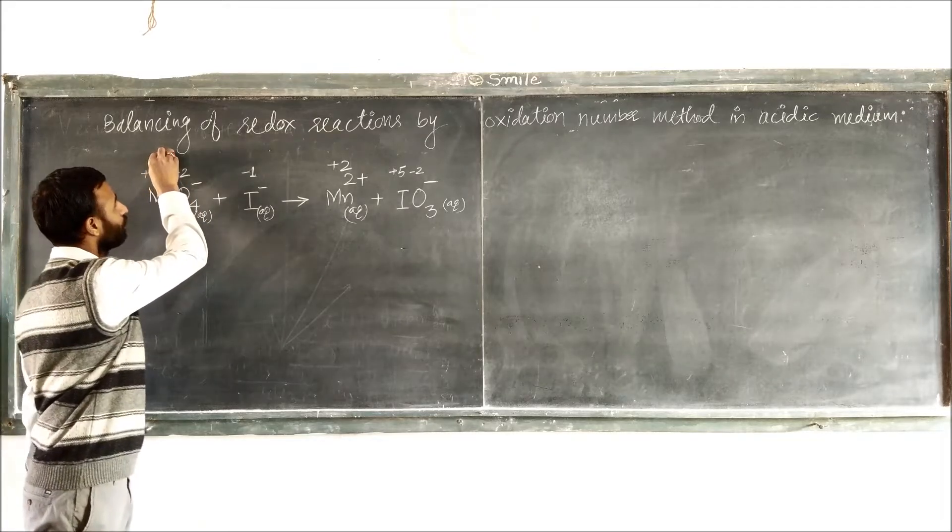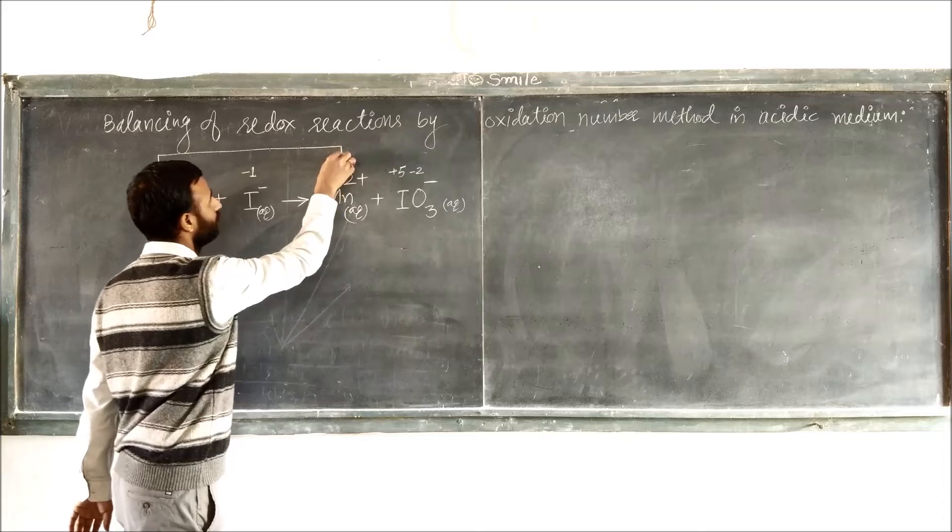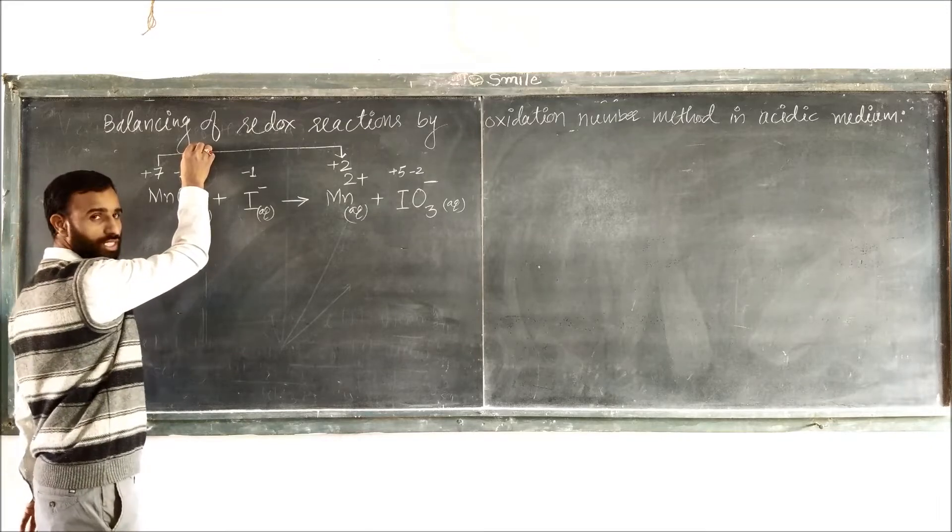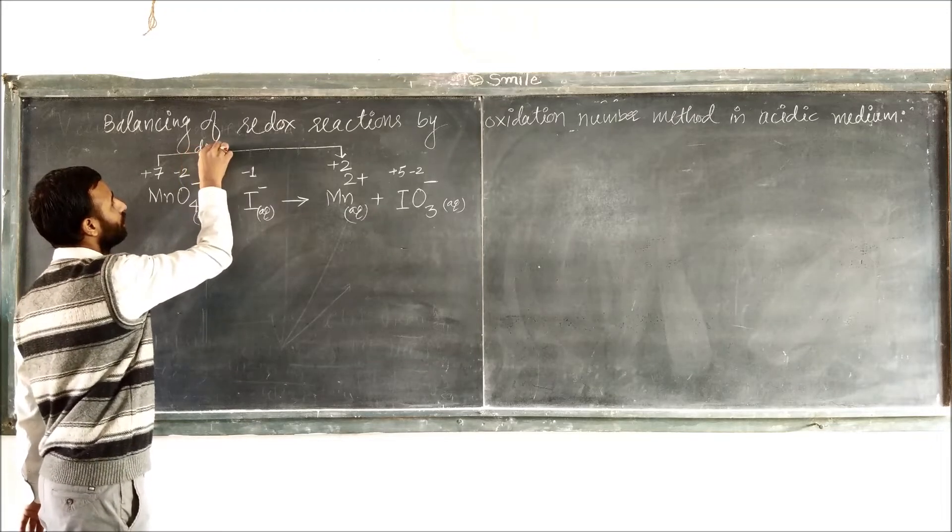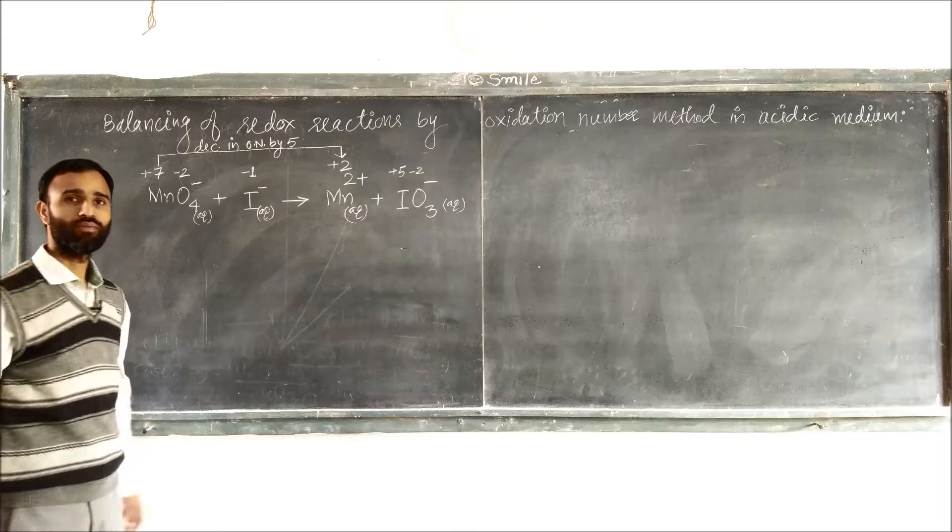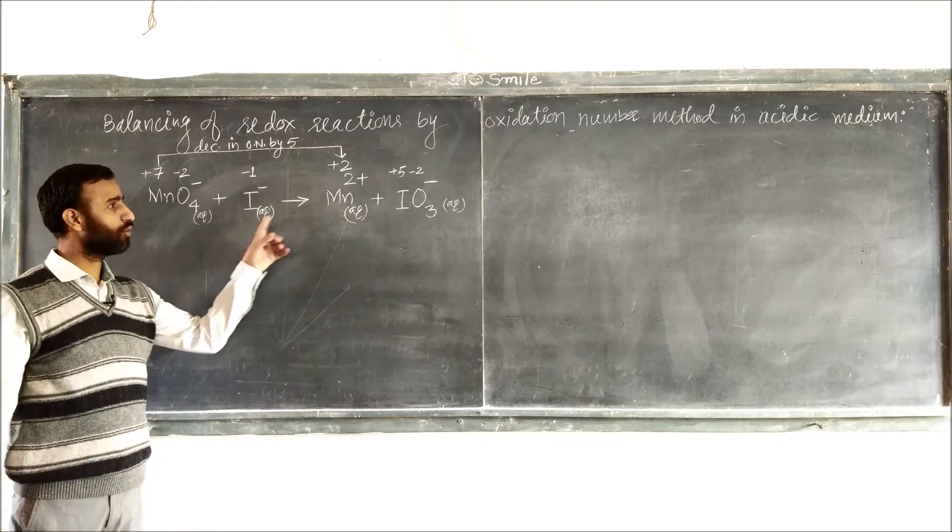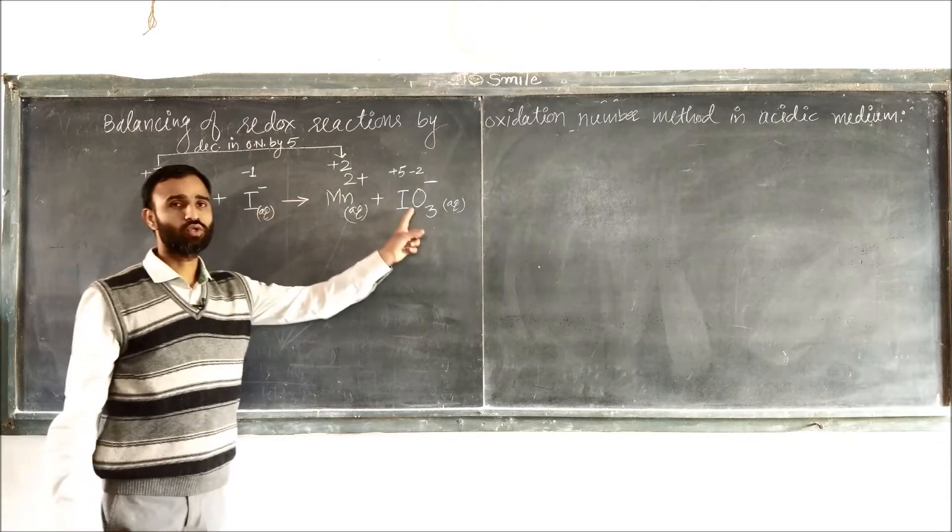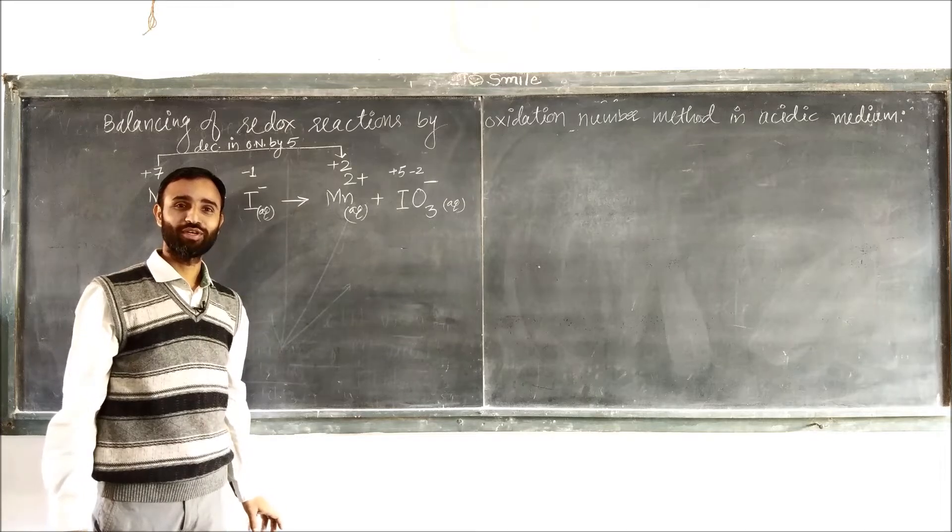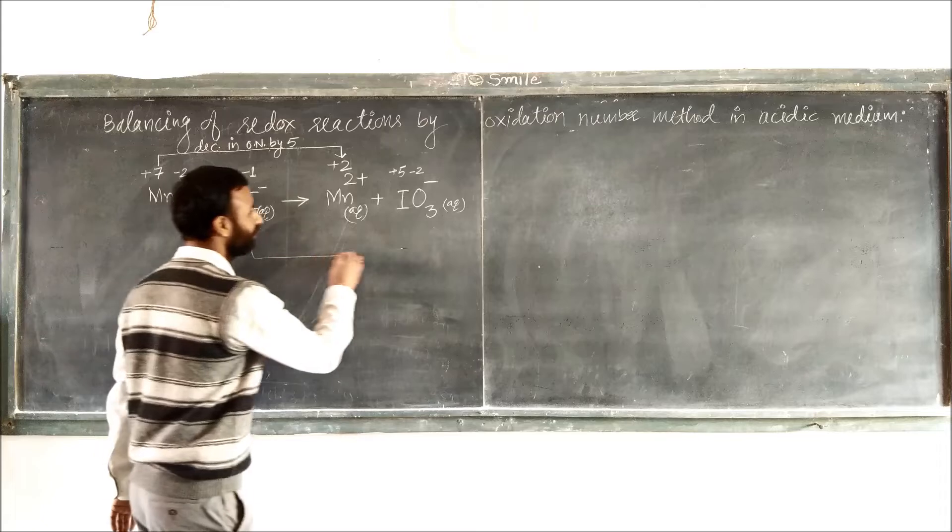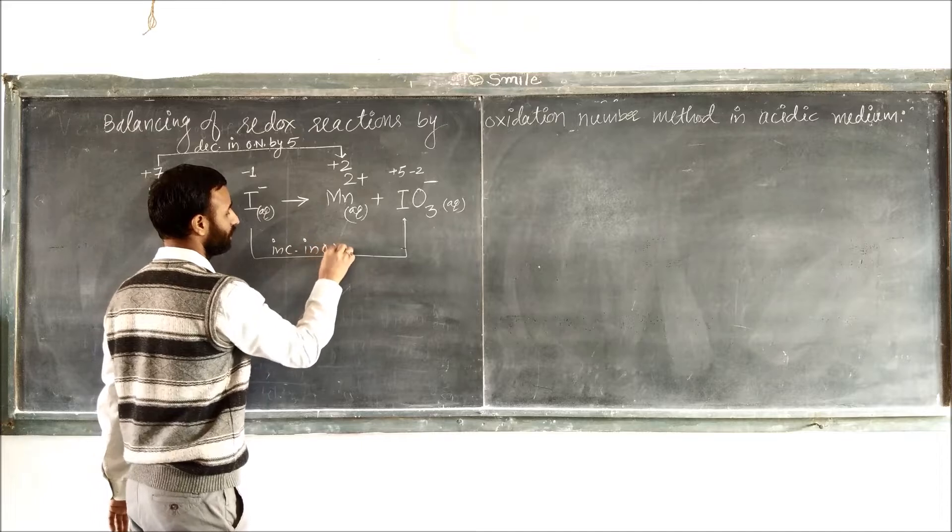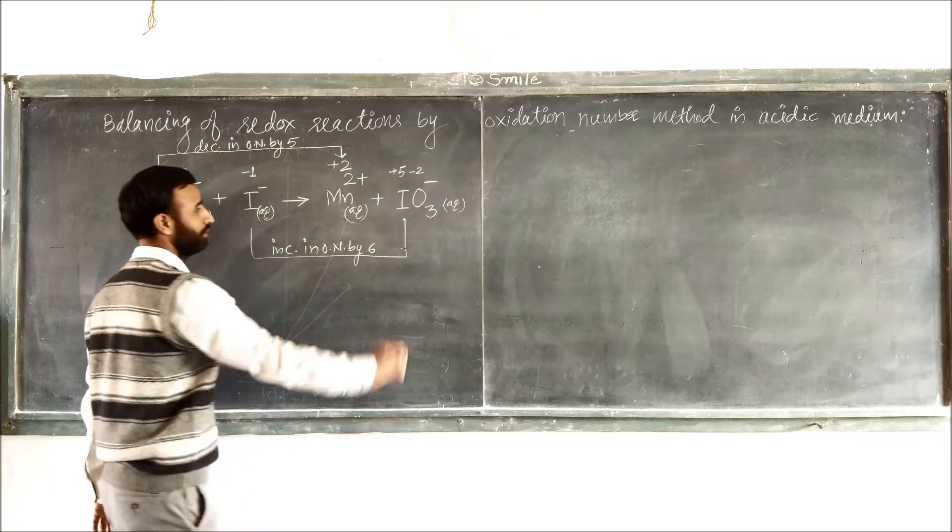Manganese changes from plus 7 to plus 2, yes, so it is decrease in oxidation number, so decrease in oxidation number by 5. What about iodine? Minus 1 to plus 5, minus 1 to plus 5, change is of 6, so increase in oxidation number, increase in oxidation number by 6.